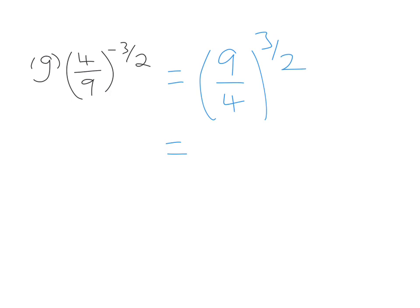So then that's 9 over 4 to the power of 1 half, all cubed. So we've got 3 over 2, all cubed, so that's 27 over 8.